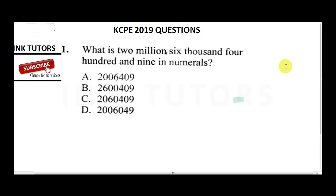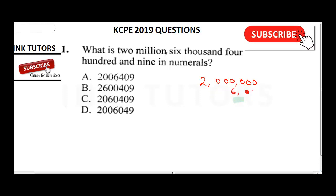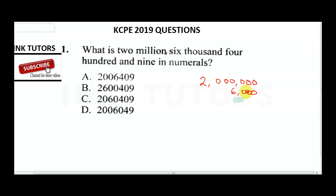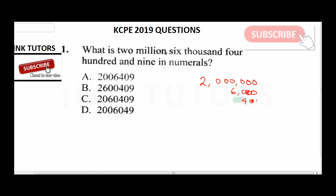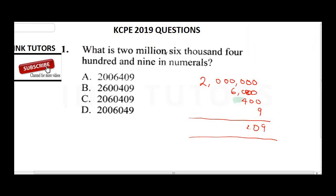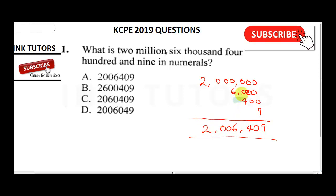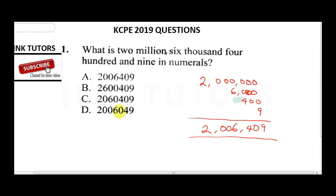Question one says: what is two million, six thousand, four hundred and nine in numerals? To solve this, you first write two million, then identify where six thousand goes, then four hundred, then nine. You put your commas in place and the correct answer is A: 2,006,409.